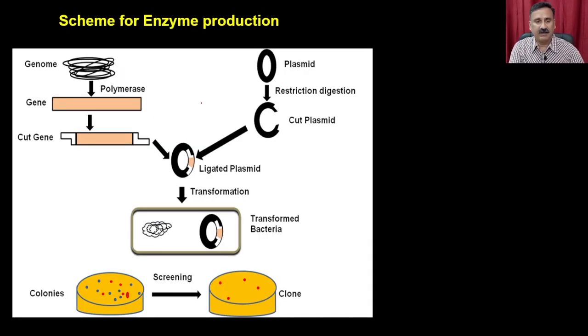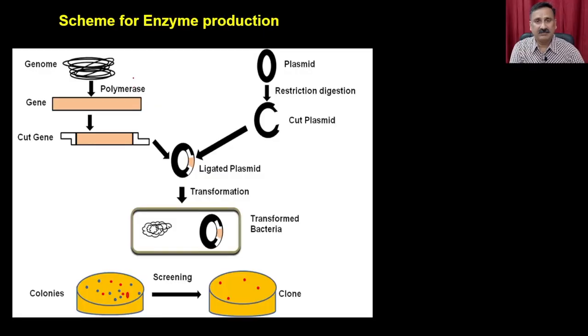We have discussed about how you can isolate the enzyme or the gene coding for the enzyme, either by screening the genomic or the cDNA library, or with the help of PCR. Once you have the gene you can digest it with restriction enzyme to get sticky ends, do the same for the vector, and when you put them together you get the ligated plasmid. That ligated plasmid you deliver to the host of your choice - either a bacterial expression host or a eukaryotic expression host.